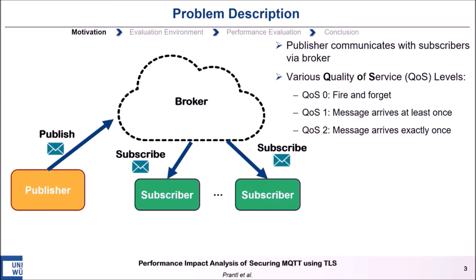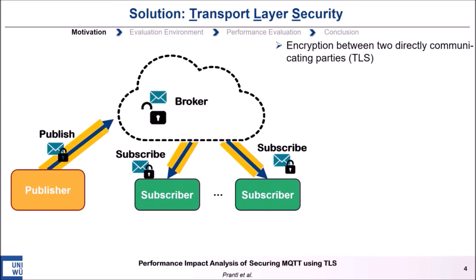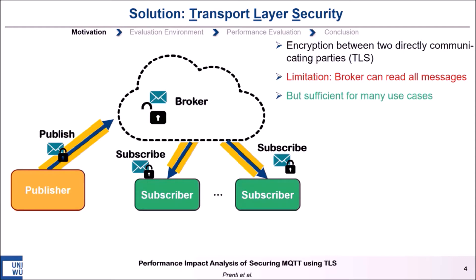So far for the functionality of MQTT. When we use TLS to secure MQTT, this means we encrypt the communication between directly communicating entities. For our example, this means we encrypt the communication between the publisher and the broker, and between the broker and the subscriber. So an attacker can't simply intercept and read messages anymore since they are now encrypted. But we still have the problem that the broker can decrypt all messages and therefore knows all messages. So using TLS to secure MQTT is only an option when the broker is a trustworthy party, though for many use cases this is a sufficient assumption. Our performance analysis is only for scenarios where the broker is a trustworthy party.